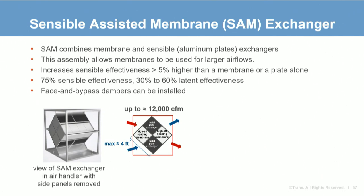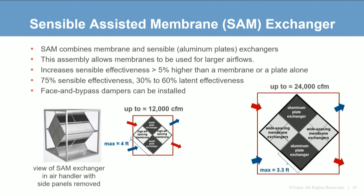Instead of using block-offs and transitions to direct flow, two aluminum fixed plate exchangers are used. Instead of four wide-spacing membrane exchangers, two high-efficiency membrane exchangers are combined with two sensible metal plate exchangers to make one assembly. The largest size SAM uses the largest aluminum exchanger at 3.3 feet; two of these large metal plate exchangers are paired with two large membrane exchangers. This largest SAM is 6.6 feet by 6.6 feet, with an airflow range more than double what is achievable with membrane exchangers alone. The metal exchangers increase overall sensible effectiveness by 5% higher than with either a membrane or sensible plate alone at the same face velocity.